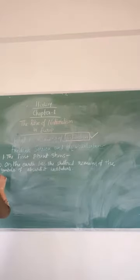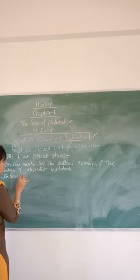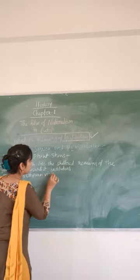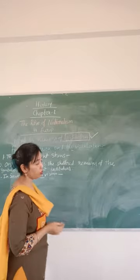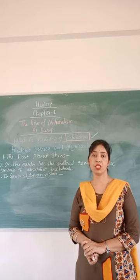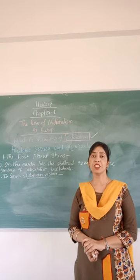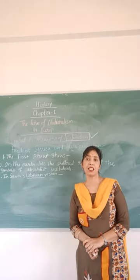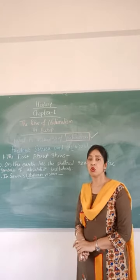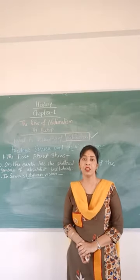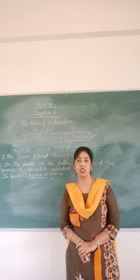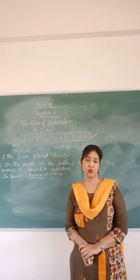The third vision is Sorrieu's Utopian vision. 'Utopian' means a vision of a society that is so ideal that it is unlikely to actually exist. In this vision, the people of the world are grouped as distinct nations, identified through their flags and national costumes.